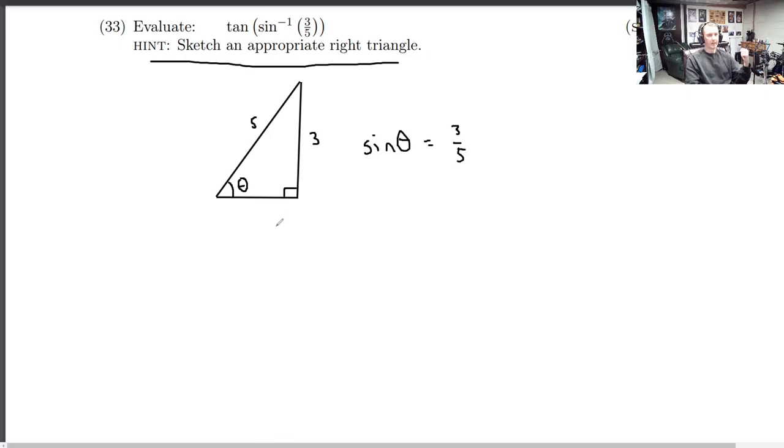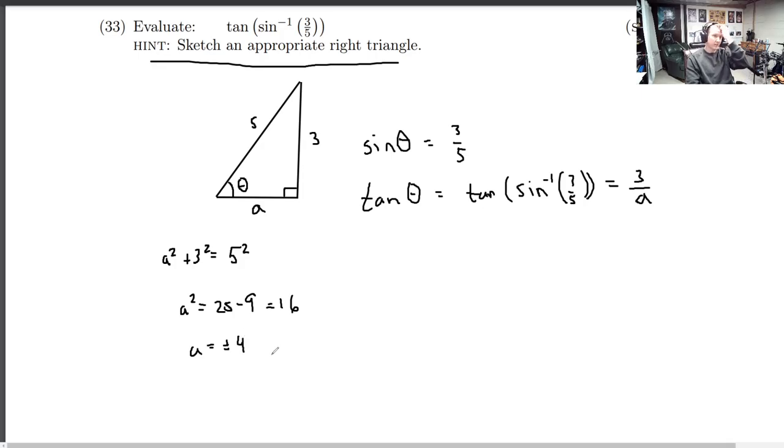So what we need to do is we need to find that leg, because the tangent of θ, which is the same as the tangent of the sine inverse of 3/5, that's the angle, remember, that's going to equal the opposite side over the adjacent side, which we do not know. So we just got to find that, and that's just going to boil down to the Pythagorean theorem: a² plus 3² equals 5². So a² is equal to 25 minus 9, which is 16, which means that a equals plus or minus 4.